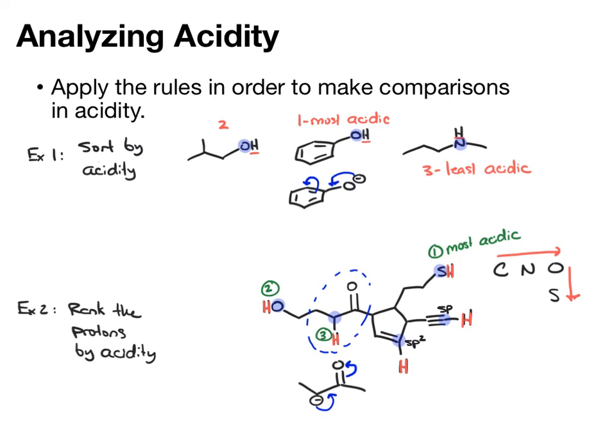Of those, the one with more S character will be more acidic. So, we have number four and number five. So, that's the ranking of those protons by acidity.